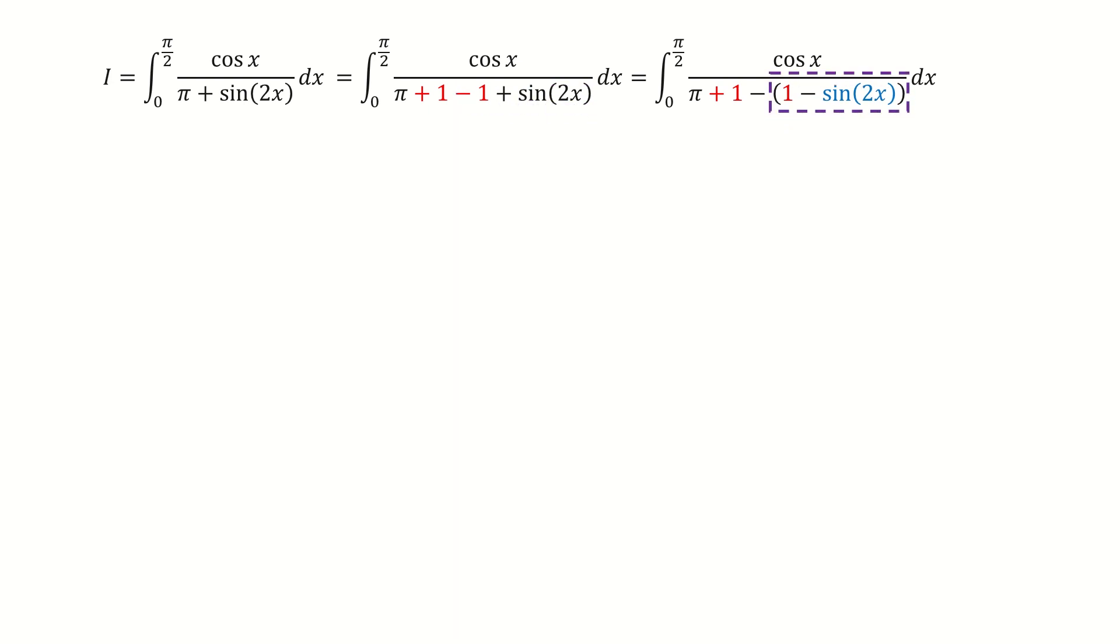Next, we will deal with this term. We write 1 as sine squared plus cosine squared, and we write sine 2x using the double angle formula.